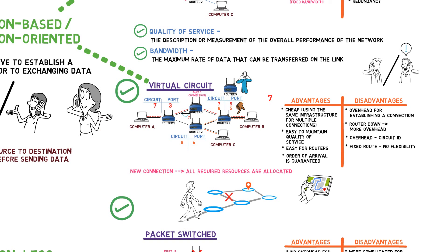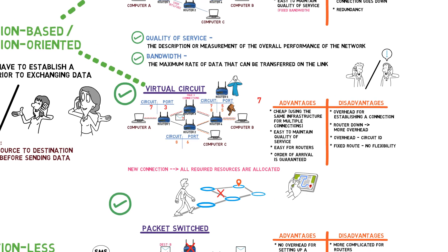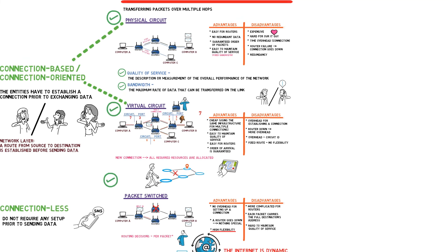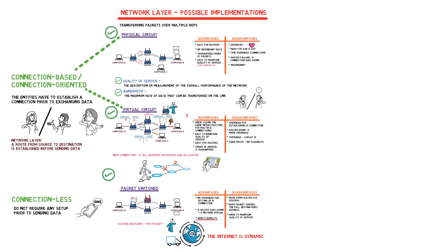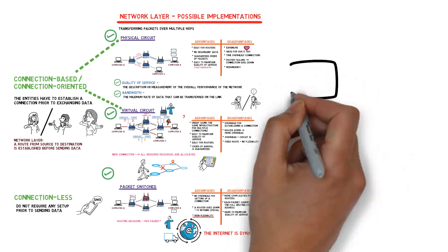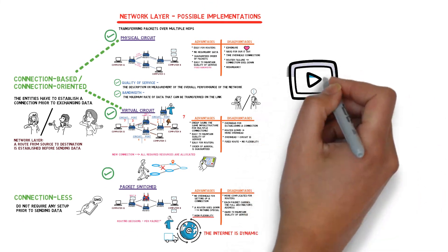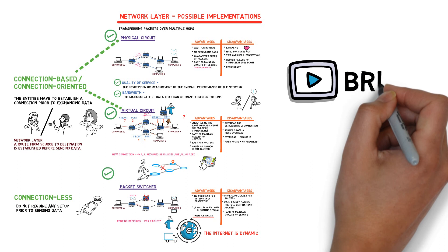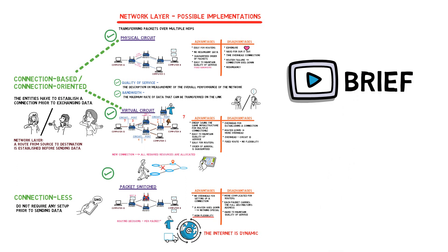We also introduced the term quality of service — the description or measurement of the overall performance of the network — and said that it's harder to maintain quality of service in connectionless implementations than in connection-based ones. We also mentioned the term bandwidth, that is, the maximum rate of data that can be transferred on a link. In the next video, we'll understand why we need logical addresses in addition to physical ones, and later we'll start dealing with the IP protocol.